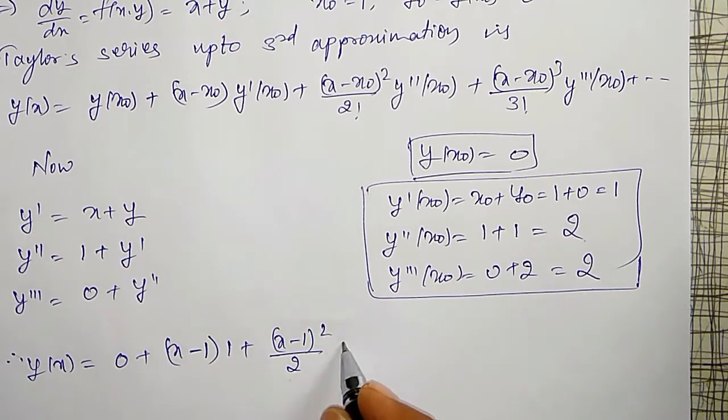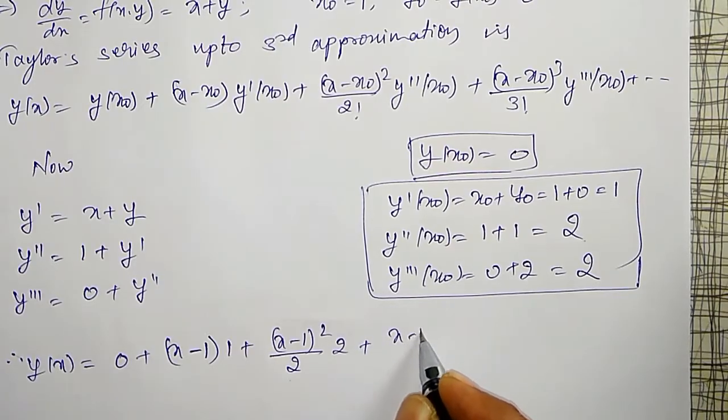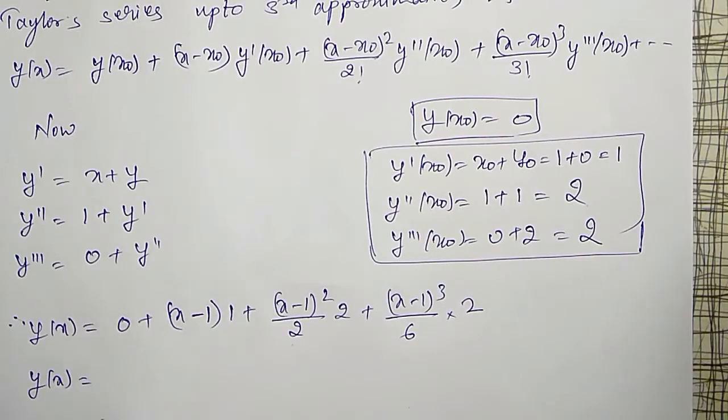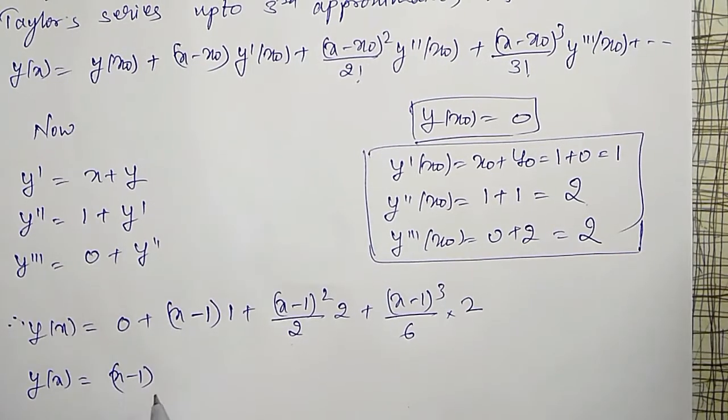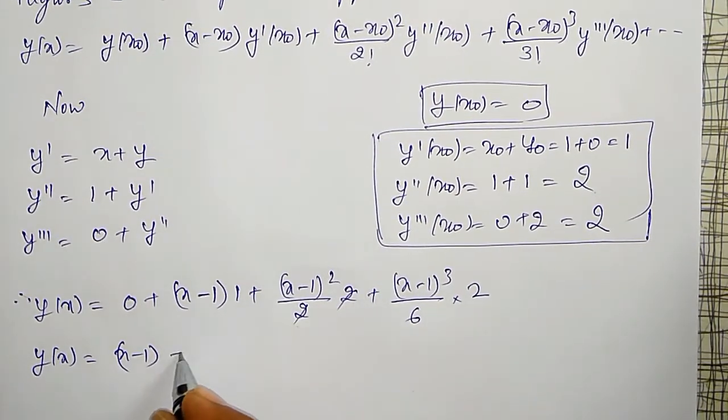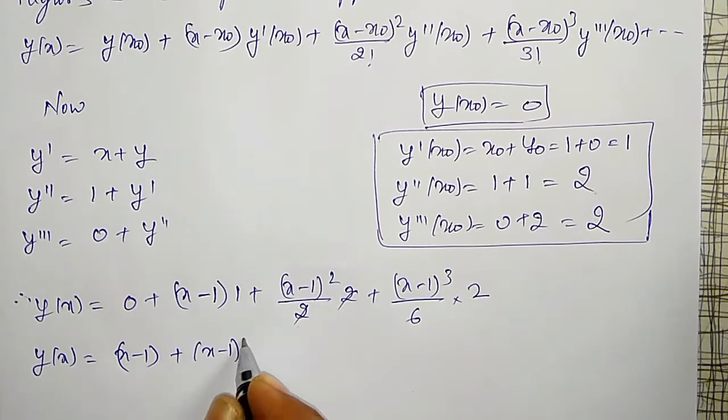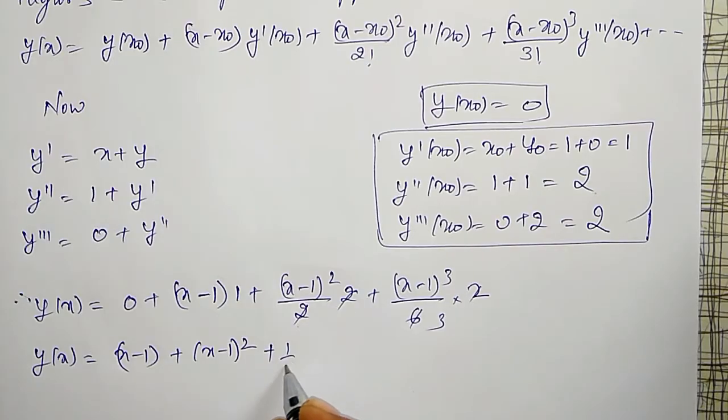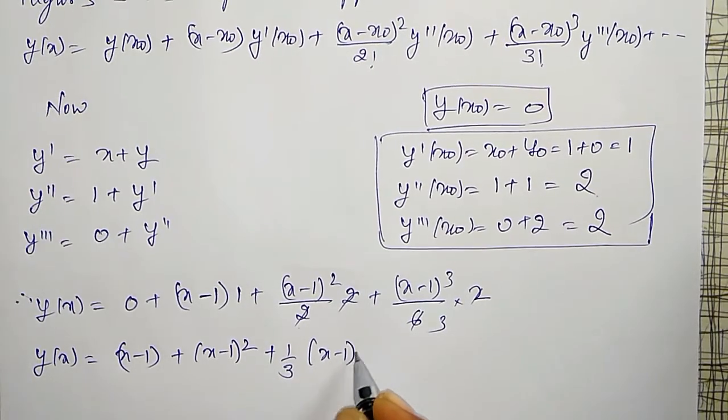Into y''(x₀) is 2, plus (x - 1)³/3 factorial is 6, into 2. Like that, y(x) will become (x - 1), 2 cancels, plus (x - 1)² plus 1/3 times (x - 1)³.